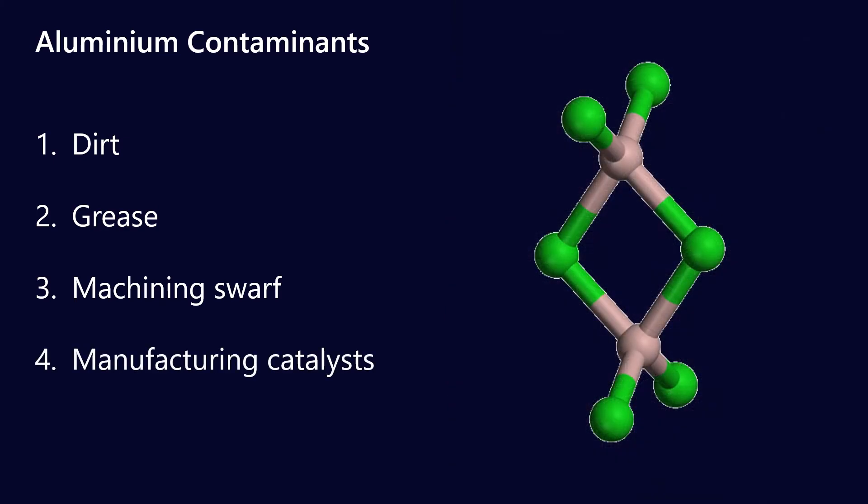Finally, aluminium can be present because it's a reasonably common manufacturing catalyst. Aluminium chloride is used in quite a lot of chemical reactions as a catalyst — it's not actually directly in the product, it's just used as a catalyst. However, should any of the catalyst end up contaminating the finished product, that's how aluminium could show up as well.